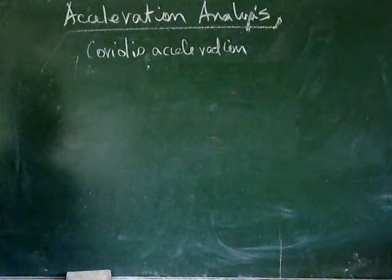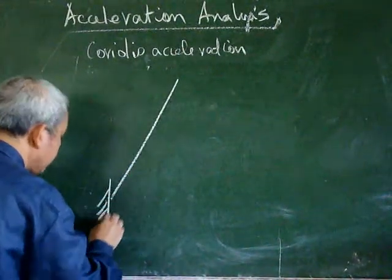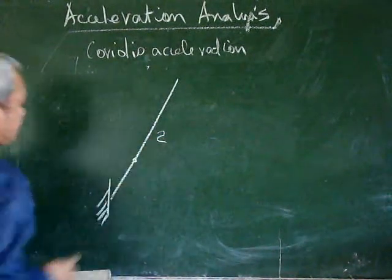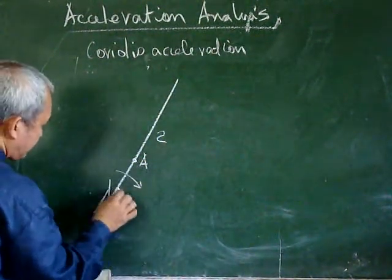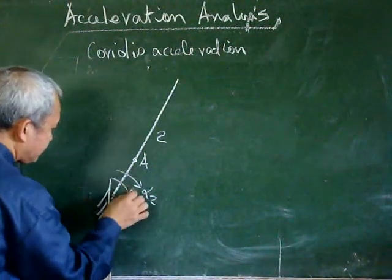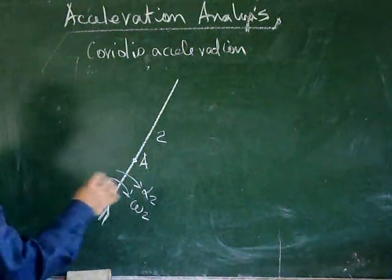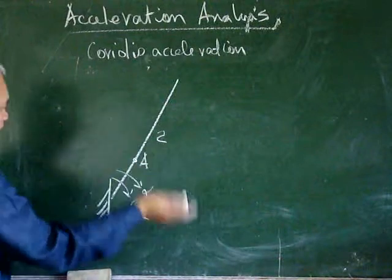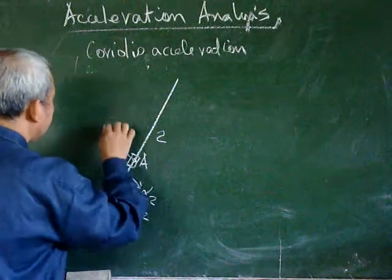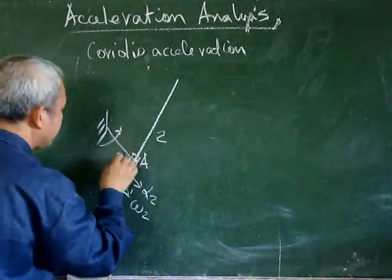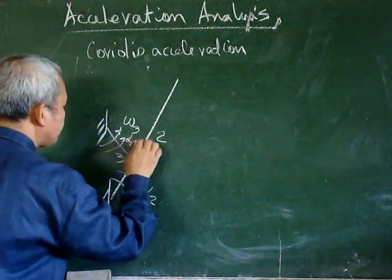By way of an example, let us consider this problem. We have a body 2, and that body 2 has point A. That point A is moving with uncertain alpha 2 and omega 2 which we do not know, because that motion of body 2 is actually determined by body 3, which has omega 3 and alpha 3 which is 0.